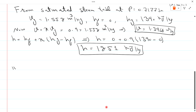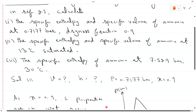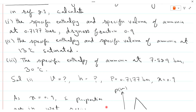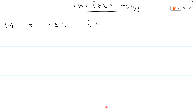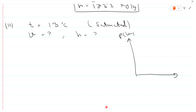Now solving part 2. Specific enthalpy and specific volume are required at temperature 13°C, saturated. On the PV diagram, at the saturated vapor line the state is fully saturated, so v equals vg and h equals hg.